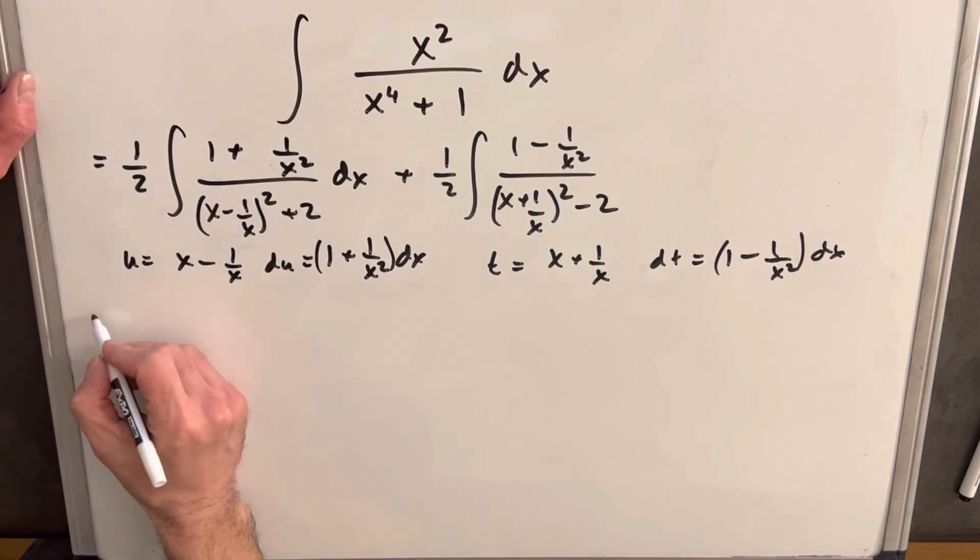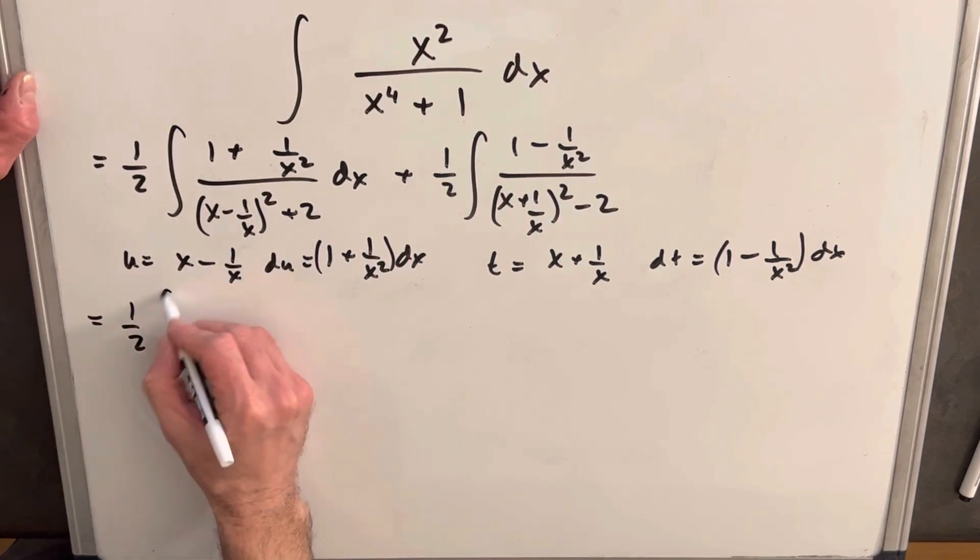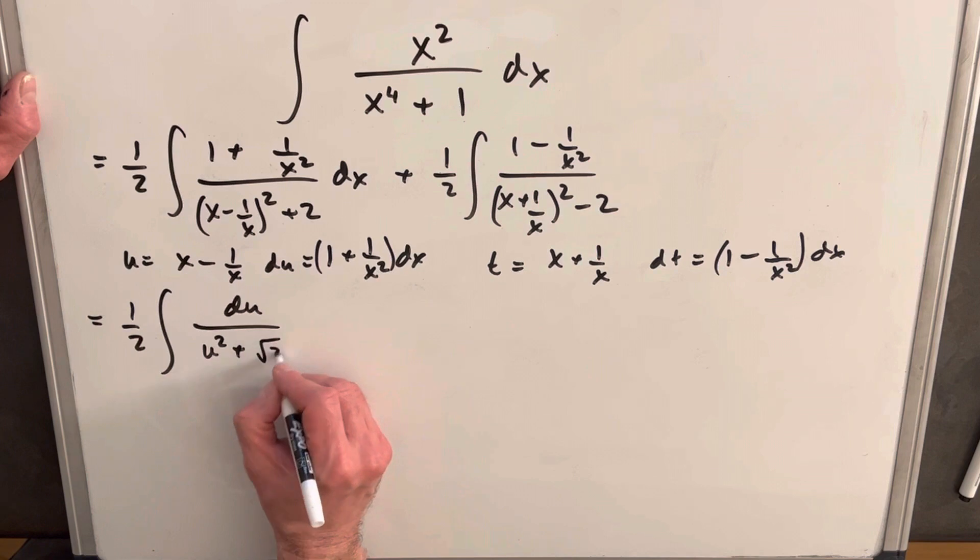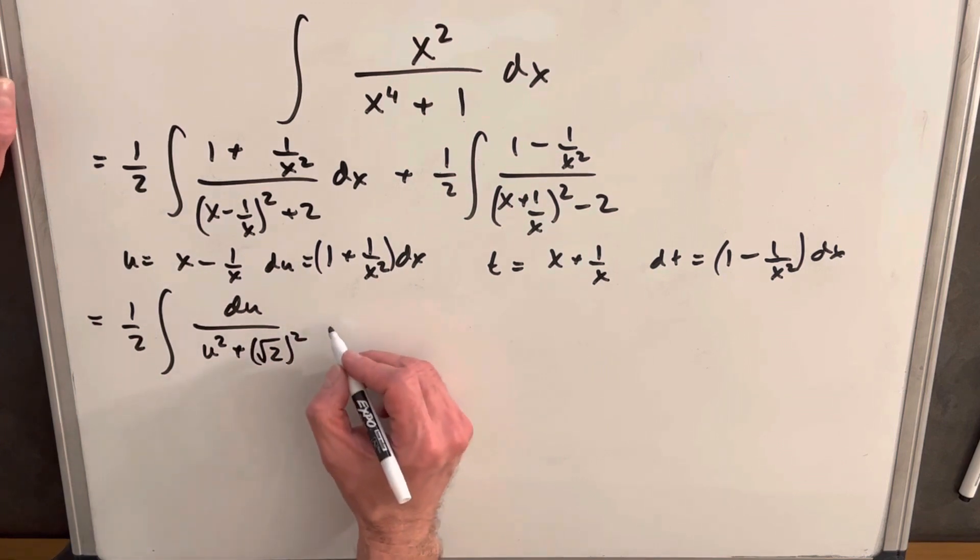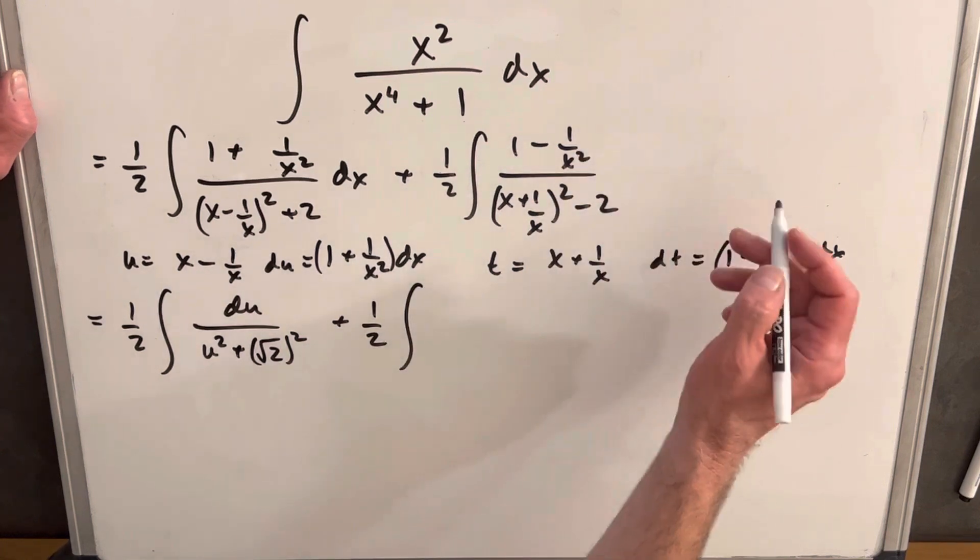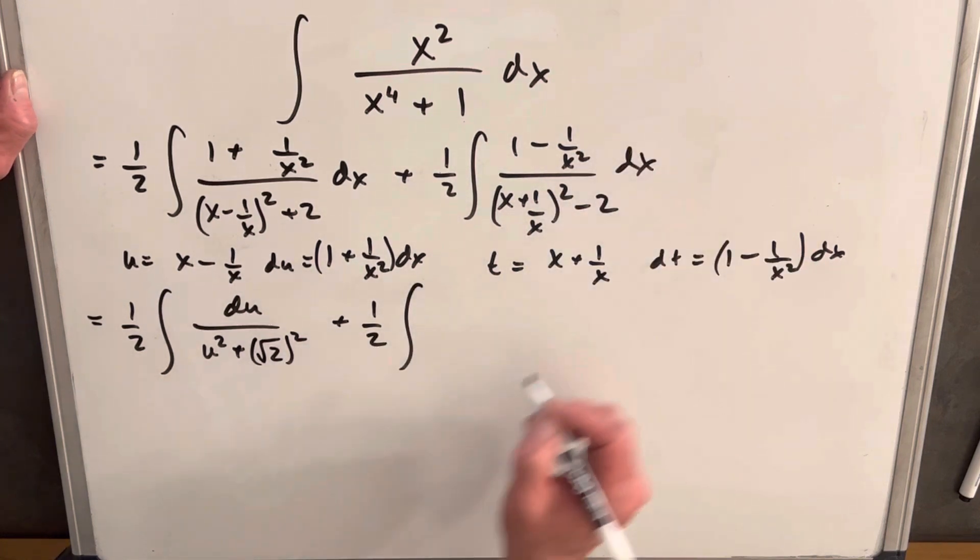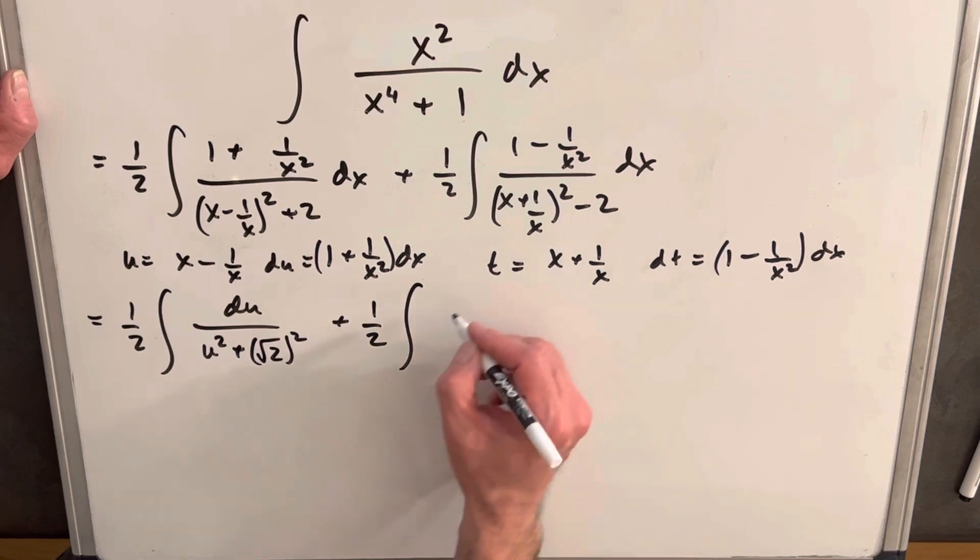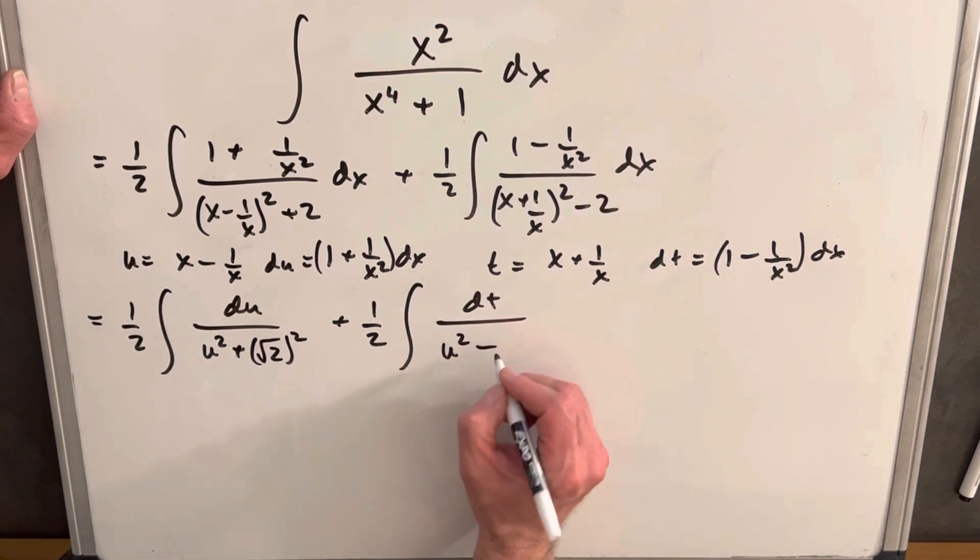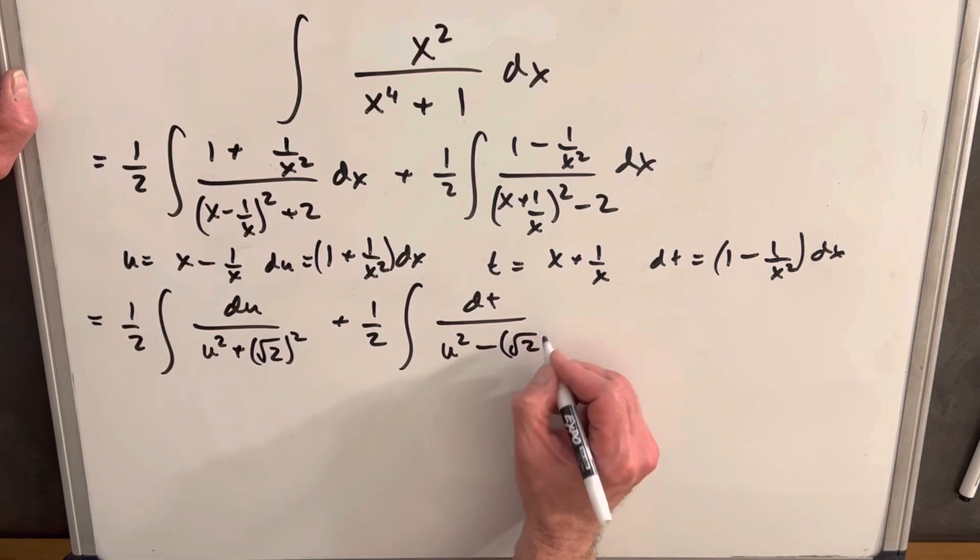So now I'm going to make my substitution. We're going to have 1 half du here over u squared plus 2. But I'm going to write my 2 as square root of 2 squared just to set up the integration we're going to do in a minute, plus 1 half. Then this piece, this is going to be our dt right here in the numerator. And then we're going to have u squared minus, and we'll do the same trick over here.